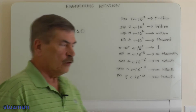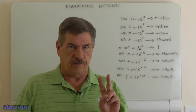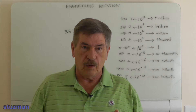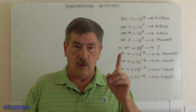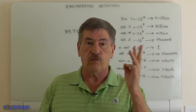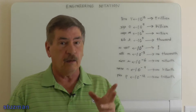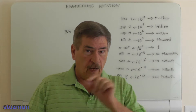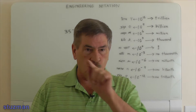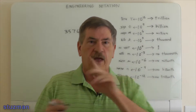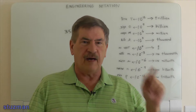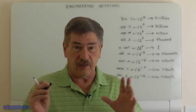Now in engineering notation we're going to do two things that are different. First, on the digit to the left of the decimal point, we have a choice — we can have one, two, or three digits to the left of the decimal point. However, when it comes to moving our decimal over, we have to do it in groups of three. We can't go one, two, three, four, five. We have to do three, six, nine, twelve, or minus three, minus six, or minus twelve. Those numbers are what go in our exponent.